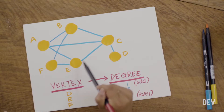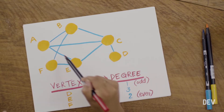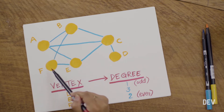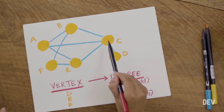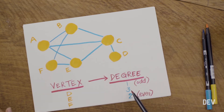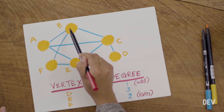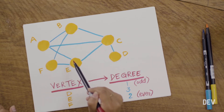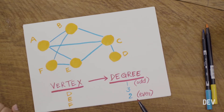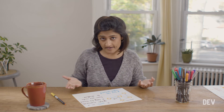Similarly, node E has three nodes adjacent to it: F, A, and C. It has a degree of three. However, node F has only two neighbors — node B and node E. Node F is an even degree node. So we can categorize a graph by the nodes in the graph as well as the edges in the graph.